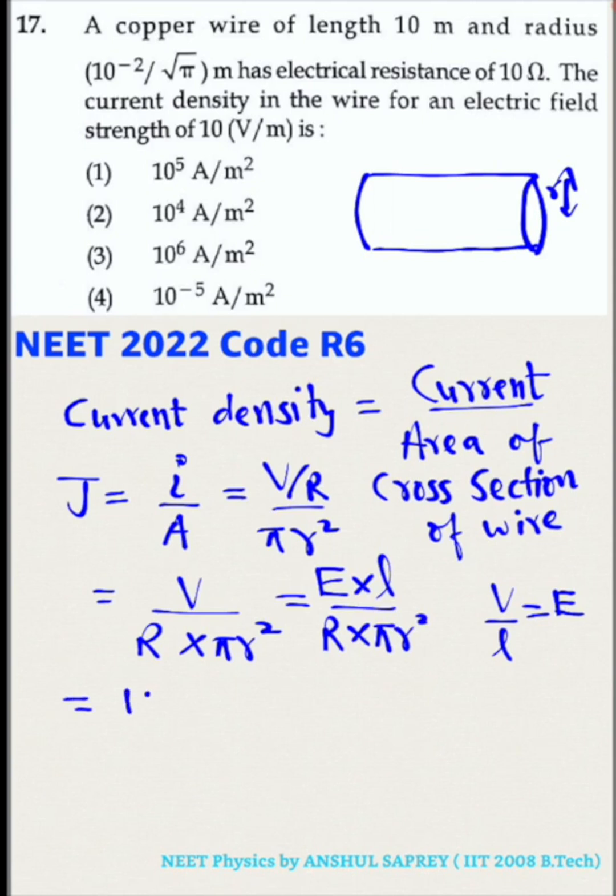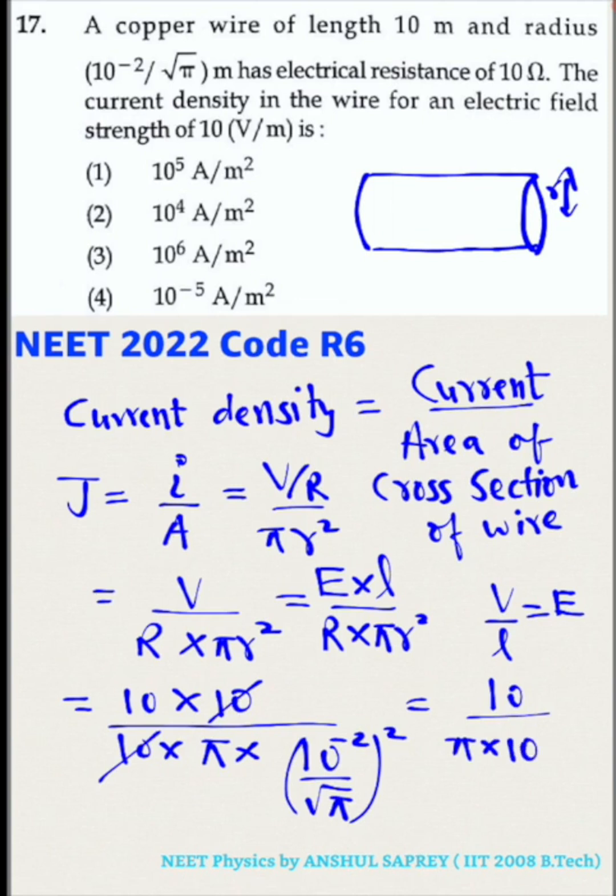If you substitute the values now, electric field is 10, length is 10 divided by resistance which is 10 into pi into radius square which is 10 raised to minus 2 by root pi whole square. Simplify this 10 divided by pi into 10 raised to minus 4 by pi cancel. So we will get answer as 10 raised to 5. So correct answer is first option.